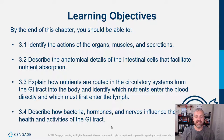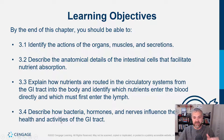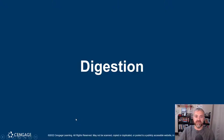Number four: describe how bacteria, hormones, and nerves influence the health and activities of your GI tract. We'll talk about the microbiome and the hormones and the nervous component involved in digestion.